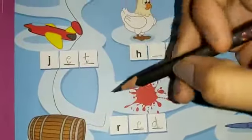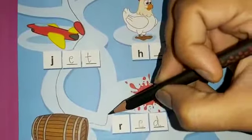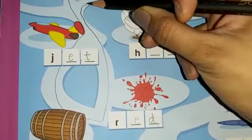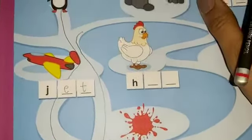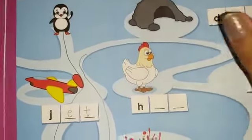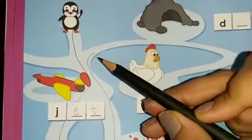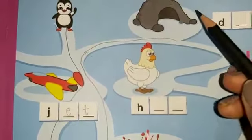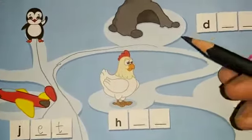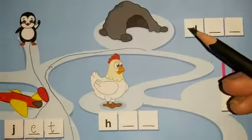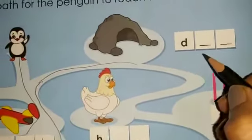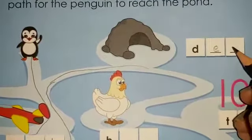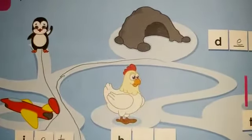Then from here onwards we will again go back to the same track and move further. We come here to this picture — identify this picture. This is a den, D-E-N. So we are going to write down E-N, den.